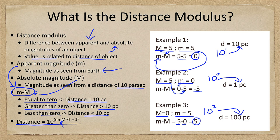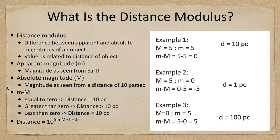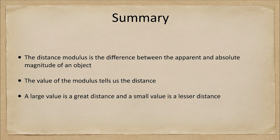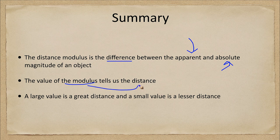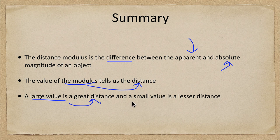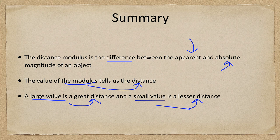Let's go ahead and finish up what we've looked at here with our summary. What we've seen is the distance modulus is the difference between the apparent and the absolute magnitudes. The value of this modulus tells us the distance of a star. A large value gives us a great distance and a small value gives us a lesser distance. And of course one of the difficulties in using this is knowing the absolute magnitude, how to figure out exactly how truly bright a star or other object is.